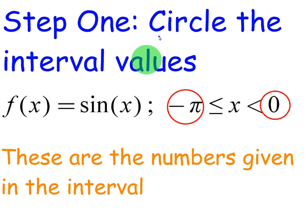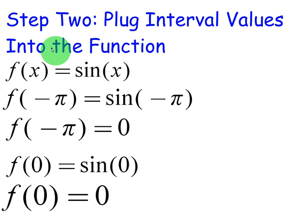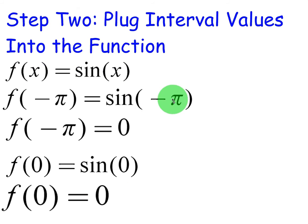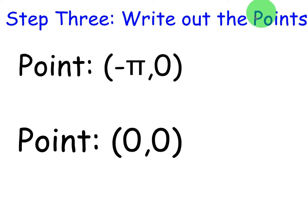Step one, circle the interval values. So this time the interval has two values, negative pi and 0. Step two is to plug the interval values into the function. The function is sine of x, so I'm going to plug in that first value, negative pi, in for sine of x. Sine of negative pi is actually the same as sine of pi. It's 180, and so the y value on the unit circle would be 0. So therefore, my first point is going to be negative pi, 0.